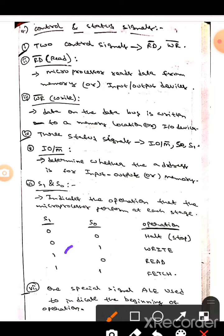If S1 equals to 1, S0 equals to 0, then the operation will be read. And S1 equals to 1 and S0 equals to 1, then the operation will be fetch.